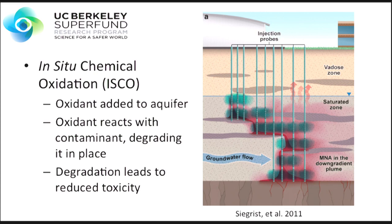One of the methods by which engineers and scientists treat contaminated groundwater is known as in-situ chemical oxidation, or ISCO for short. Oxidation is just a fancy word for the breakdown or transformation of chemicals into forms that may be less harmful to us. The term in-situ refers to the fact that in ISCO, this treatment happens in place in the aquifer without the need for excavation or pumping of the groundwater to the surface. So in a typical ISCO treatment, oxidant solution is added into the aquifer where it then reacts with contaminants, degrading those contaminants in place and ideally leading to reduced toxicity or risk.